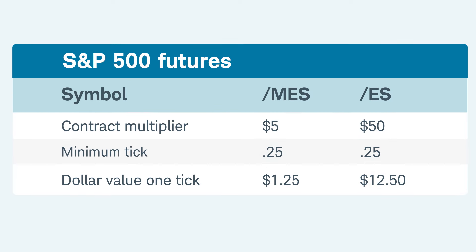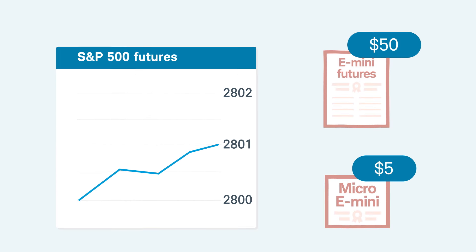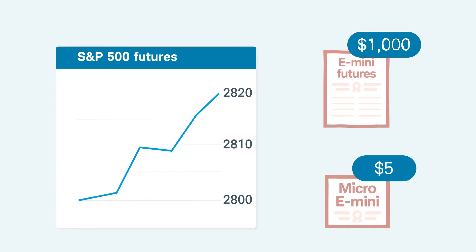For comparison, the dollar value of one tick for the E-S is equal to $12.50, which means a full one-point move is worth $50. If the S&P 500 gained 20 points, the E-S would gain $1,000, whereas the Micro contract would only be up $100.